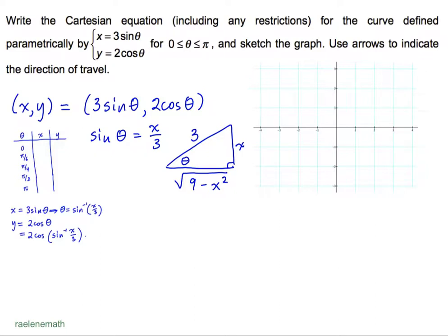And then we can use the second equation, which says y = 2cos(θ), and theta is the same theta for both the x and the y equations. So this is the same triangle that is involved for y. So if we come up with the cosine of theta from the triangle, we get the adjacent over the hypotenuse, which is going to be 2 times the square root of 9 - x², all divided by 3. The 2 was already part of the definition of the y-coordinate.